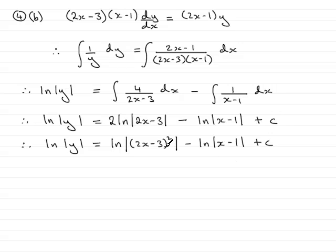Now, we have natural log of something, take away natural log of something else, and so we can use the division rule. So, that becomes the natural log of the mod of y equals the natural log of the mod, then, of 2x minus 3, all squared, all divided by x minus 1. And then we have plus the constant c.